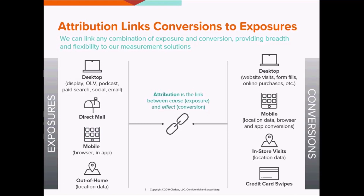Using them, we're able to see how, for example, direct mail advertisements influence people to purchase an item from the company's website. Any combination of activities across these exposure and conversion environments is a possible conversion path. Attribution is a critical step in understanding the consumer's purchase journey and how marketing helps them navigate it.